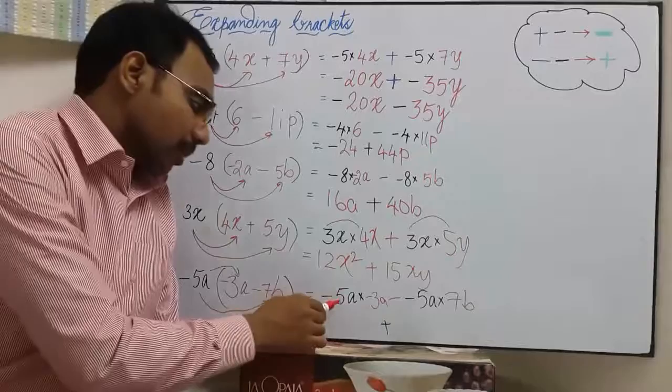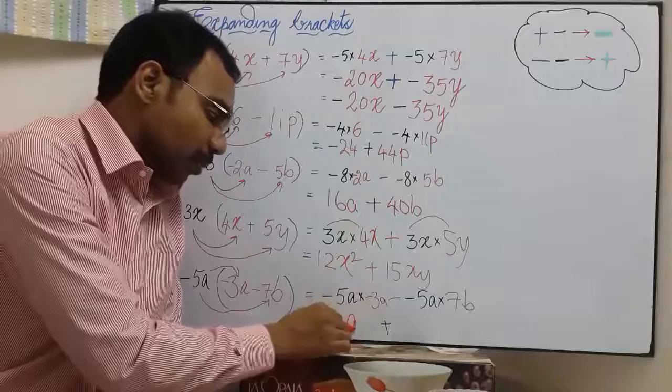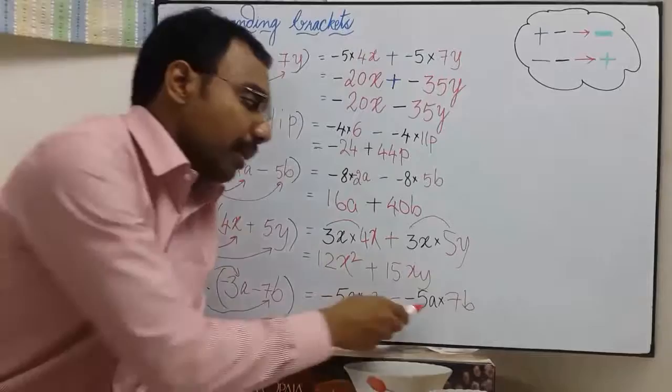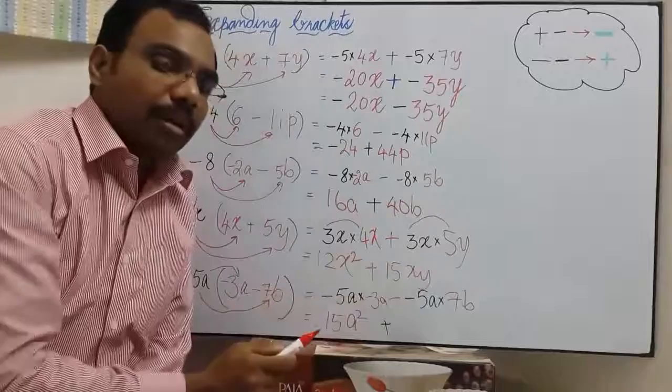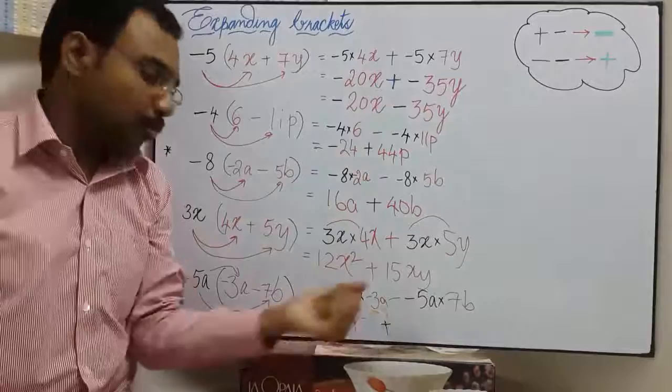Minus 5a times 7b. Again, negative 5 into negative 3 is 15. A times a is a square. And minus 5 times 7 is minus 35ab. Now subtracting negative number is equivalent to positive. So whenever you see two negative signs together, make it as positive. So it becomes 35ab.